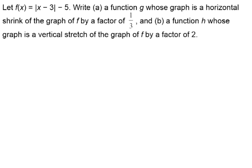In this video, we're going to be writing stretches and shrinks of absolute value functions. Here we have the equation where we're letting f of x equal the absolute value of x minus 3, minus 5. We're going to write a function g whose graph is a horizontal shrink of the graph of f by a factor of one-third, and then a function h whose graph is a vertical stretch of the graph of f by a factor of 2.